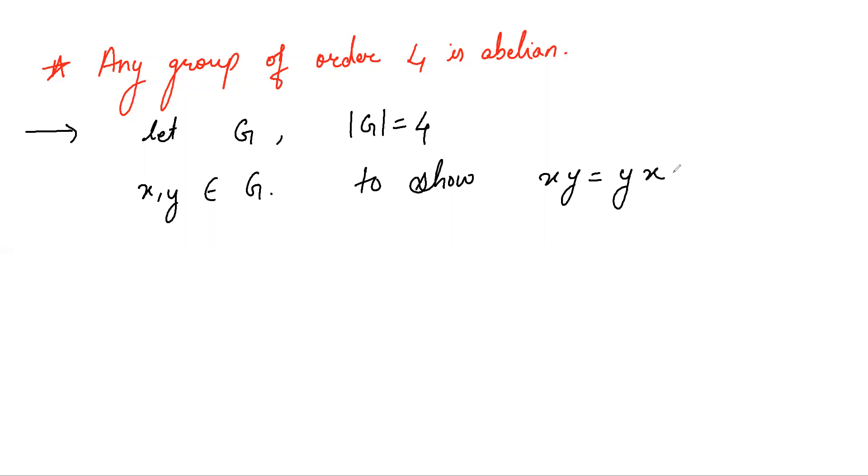Now note that if order of x is 4, then G is a group generated by x and hence it is a cyclic group which is abelian.